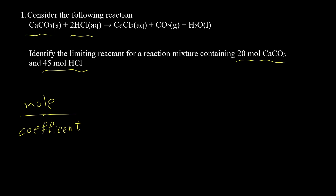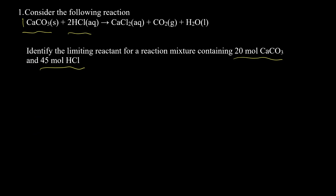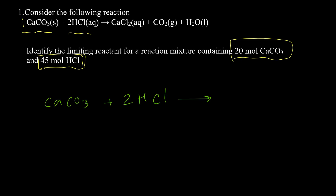The limiting reactant has the lower value for the mole-to-coefficient ratio. Let's solve this problem. Consider the following reaction: calcium carbonate plus 2 mol of HCl produces calcium chloride, carbon dioxide, and water. The question asks to identify the limiting reactant for a reaction mixture containing 20 mol of calcium carbonate and 45 mol of HCl.